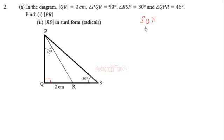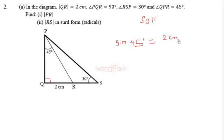Sine equals opposite over hypotenuse. Therefore we take sin(45°), which should be equal to the opposite side — 2 centimeters — over PR, the side we want to find.